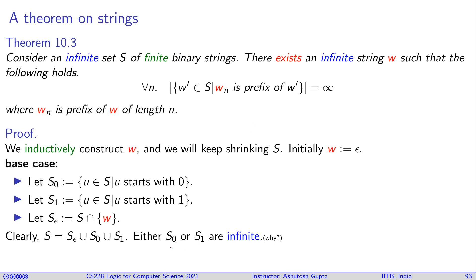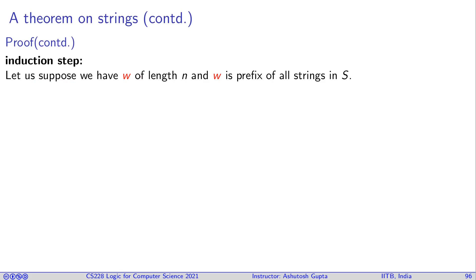So by definition of S_0, S_1, one of them must be infinite. Otherwise, how would the union of these three things be infinite? So let's suppose S_0 is infinite set. If S_0 is infinite set, then what do I do? I expand my word by letter 0. And now call my S to be S_0. Now my set S has shrunk and W has expanded. Otherwise, we say W equals to 1 and S is set to S_1. By this definition, we know W is prefix of all strings in the shrunk S.